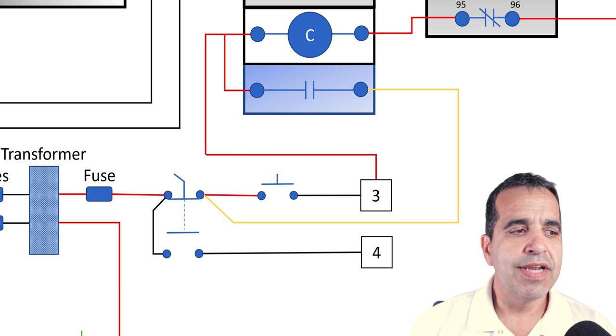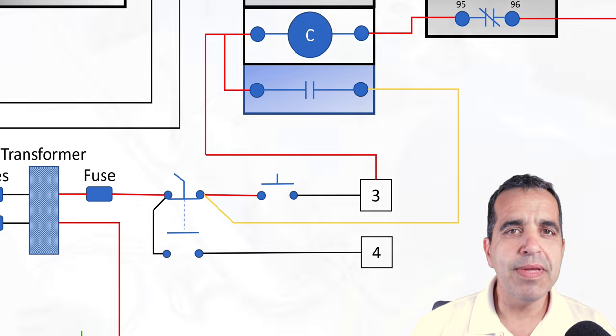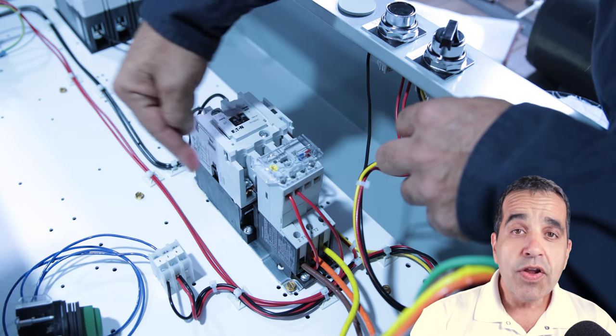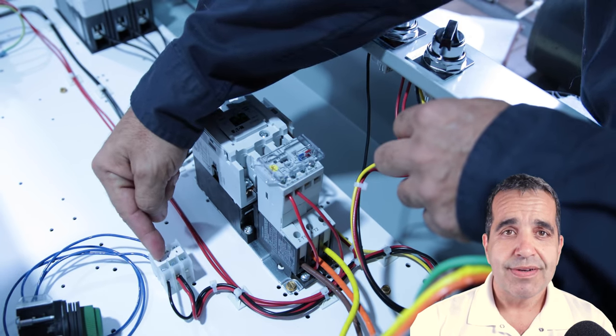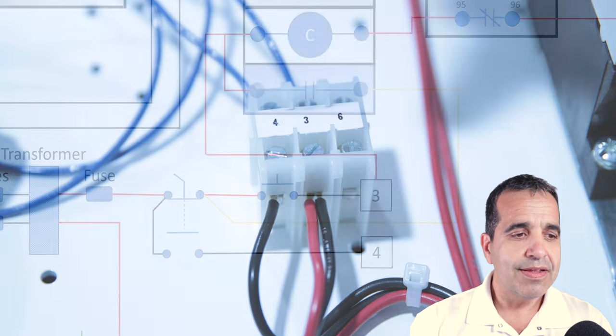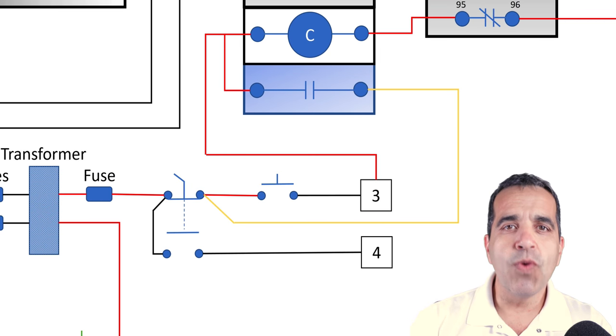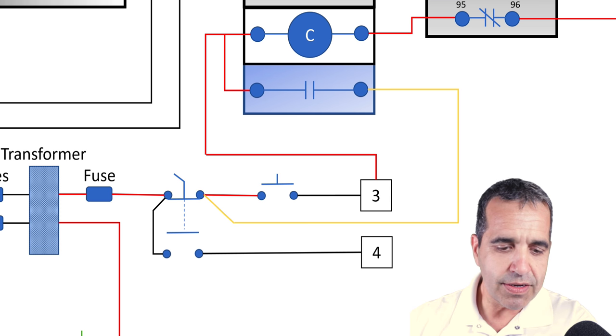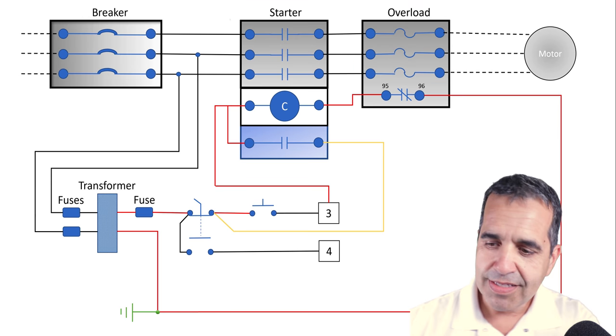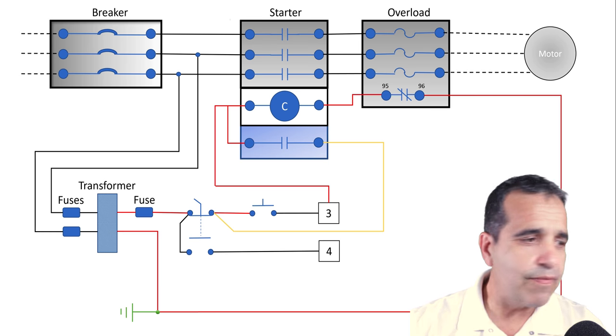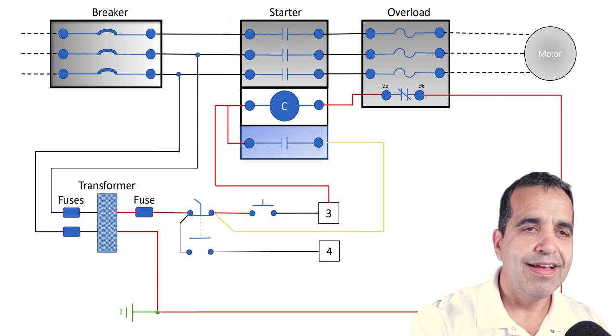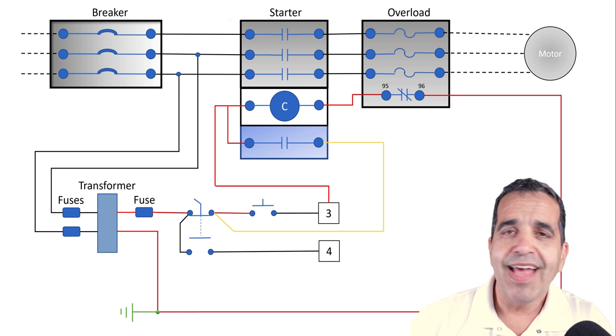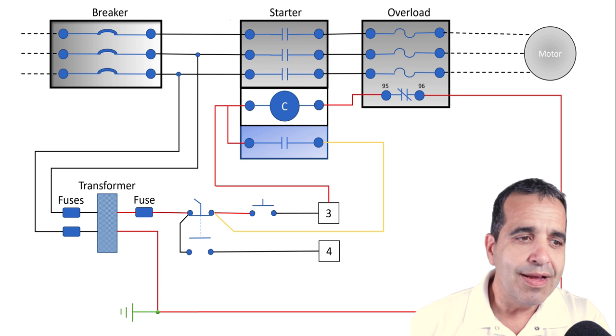Finally, we have another wire coming from the auto side of our switch, and it is feeding terminal block number four in our pump panel. Now typically what you'll do here is you'll feed some kind of field device—it could be a float, it could be a timer, anything like that.